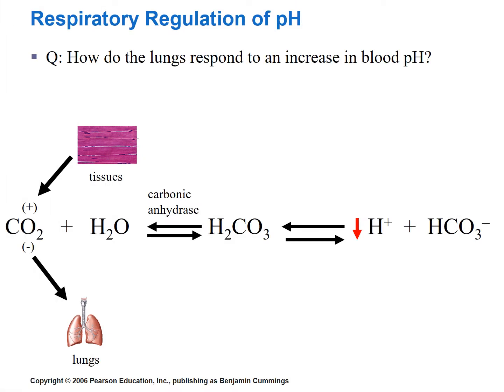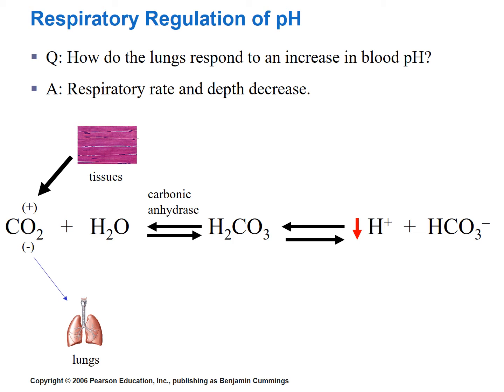Let's look at a couple of scenarios. How would the lungs respond to an increase in blood pH? Remember, an increase in blood pH means a decrease in hydrogen ion concentration. The lungs would respond by decreasing respiration rate and depth of breathing, removing less carbon dioxide. That would cause an increase in carbon dioxide levels, shifting the equation to the right, increasing hydrogen ion concentration and lowering blood pH hopefully back to normal levels.